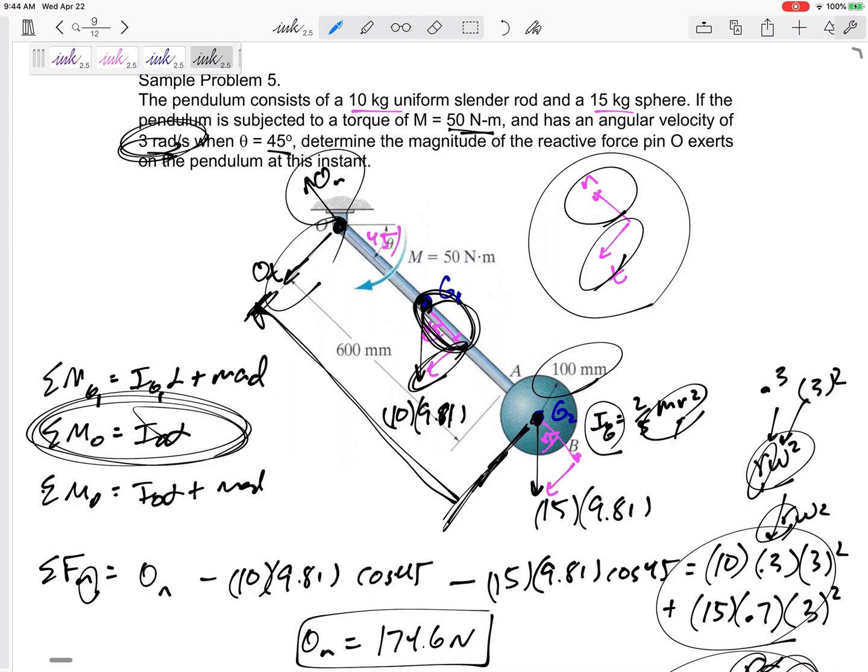So you draw your free body diagram, draw only the forces that are really acting on here, and draw your axes. Define your axes according to the acceleration. So if your acceleration is going to be normal tangential, draw normal tangential. If your acceleration is going to be XY, draw XY.